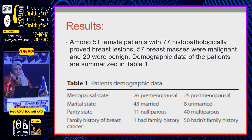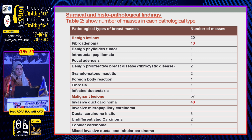Among the 51 female patients, 77 histopathologically proven breast lesions were identified: 57 were malignant and 20 were benign. The demographic data of the patients are summarized in the table. The most common type of benign lesion was fibroadenoma, and the most common type of malignant lesion was invasive ductal carcinoma.